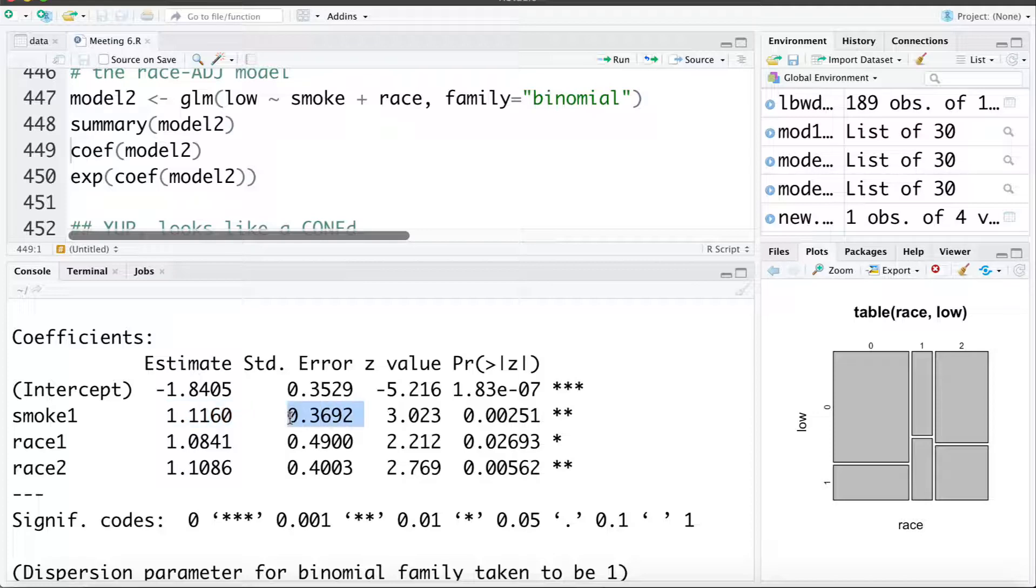We also see the standard error has not inflated drastically, it has increased a bit and that's because there was quite a strong association between smoking and race category. But if we want to think about collinearity we can think conceptually knowing someone's race is not almost the same thing as knowing whether or not they smoke. Definitely not. We saw that whites were much more likely to smoke than the other race categories but they weren't containing almost the same information. Knowing if someone was white isn't the same as knowing they smoke.